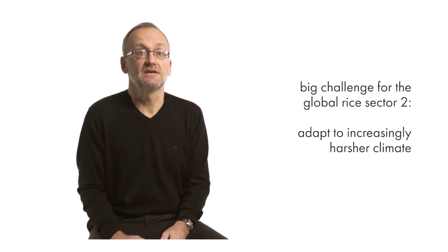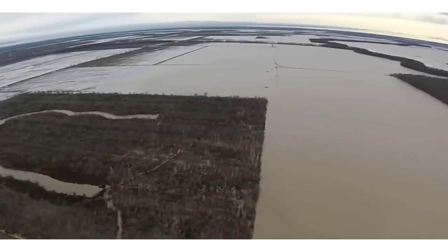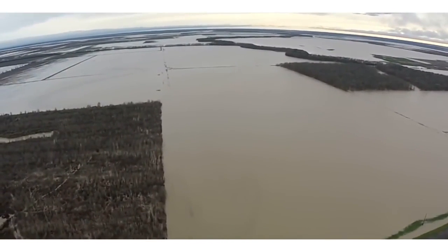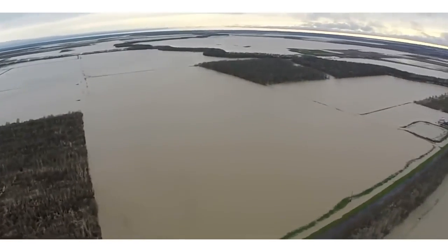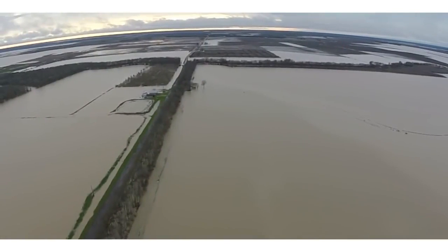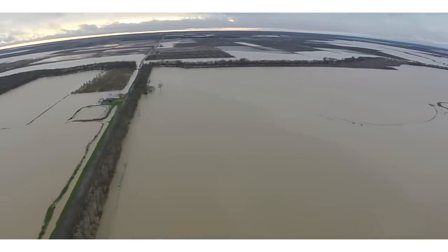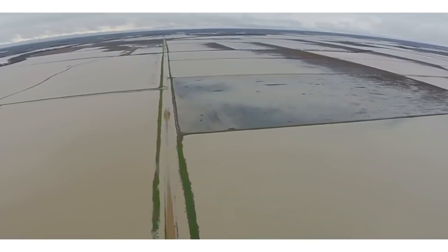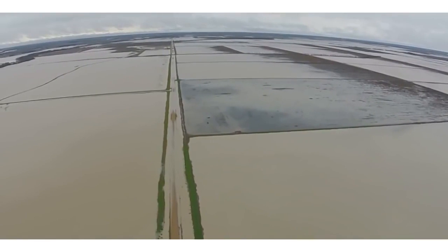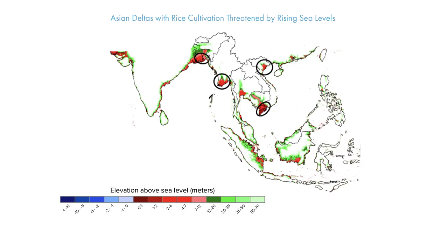The second big challenge is adapting rice farming to an increasingly harsher climate. Every degree Celsius rise in global temperature could cause yield losses of up to 10% if we do nothing. Beyond temperature, there are increasingly dramatic weather patterns: delayed or mistimed monsoon onset, El Niño and La Niña events, droughts, floods, heat waves, sea level rise, and saltwater intrusion into Asia's mega deltas. In the last 25 years, nearly half of the growth in rice production came from just these mega deltas, so if they are now under threat from climate change, we face a massive problem.